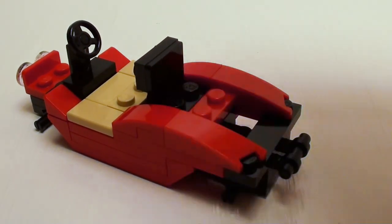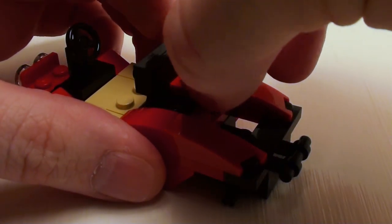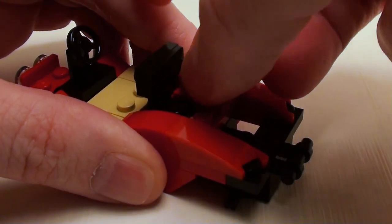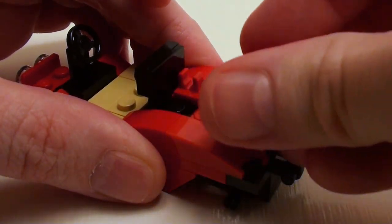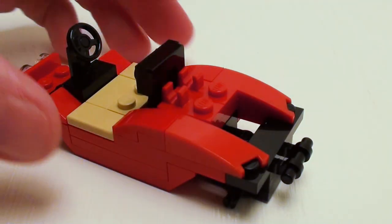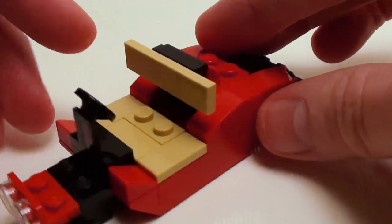Now I want to secure this back portion with a pair of 1 by 2 plates with top holder. Make sure that the holder is next to the angular plate. And for the back portion of the seat, a 1 by 4 flat tile in that area.